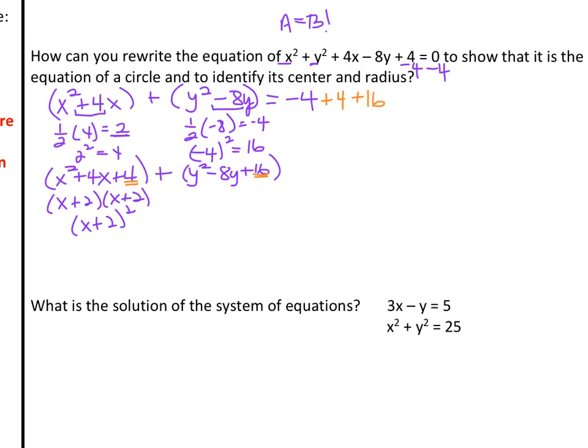Factor: what are two numbers that multiply to get 16, but add to get -8? That would be -4 and -4. Here we have (y-4) and (y-4), giving us (y-4)². Now, it's addition in between them. And then on the right, -4 + 4 + 16 = 16. So, we have (x+2)² + (y-4)² = 16. This looks like the equation in the standard form for a circle.